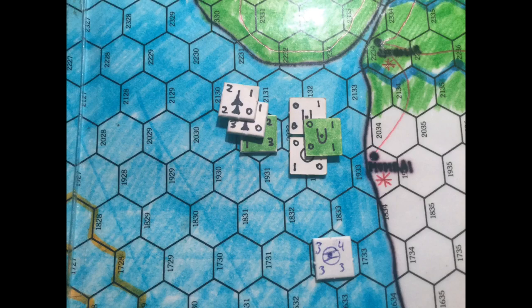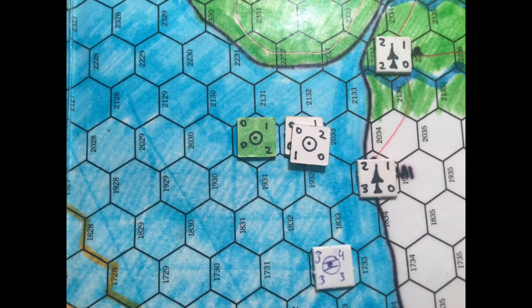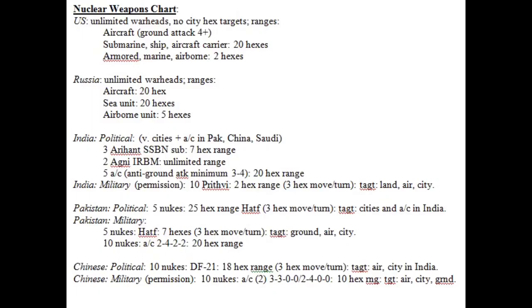In the Indian player's turn, the aircraft carrier participates. The advantage of the aircraft carrier is that it can attack a target and cannot be attacked in return because it's too far away. This carrier attacks both the submarine and the ship — with a value of four against the ship and three against the submarine. The Indian submarine attacks the Pakistani submarine, the Indian surface ship attacks the Pakistani surface ship, and India deploys two aircraft with a value of one for anti-ship attacks. The net result: the Pakistani submarine is sunk and the surface ship is damaged.